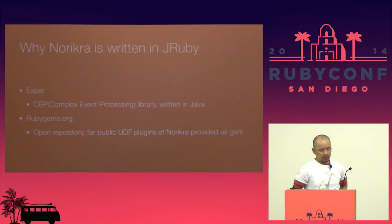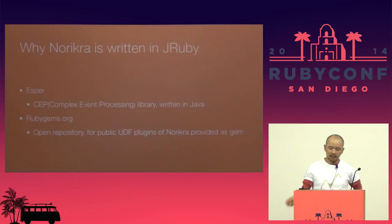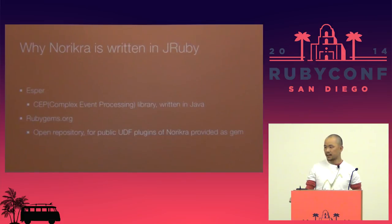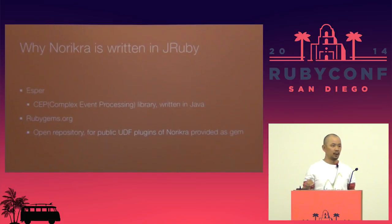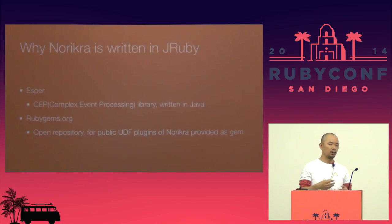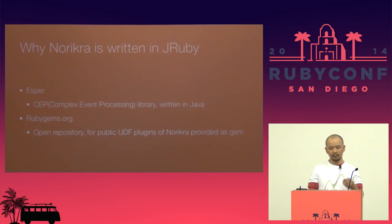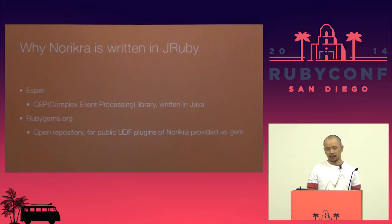Why is Norikra written in JRuby? There are two big factors. One is Esper. Esper is a complex event processing library written in Java. Esper provides an SQL-like DSL that is the base of Norikra's query engine. Esper is a very well-written library, and we can process a very huge amount of data with it. The other factor is RubyGems.org, which serves as an open repository for public UDF plugins of Norikra, provided as RubyGems.